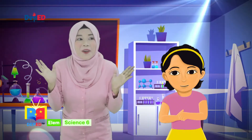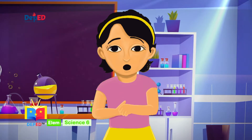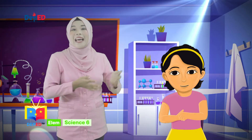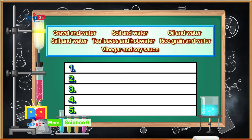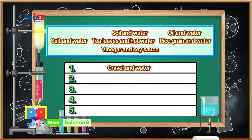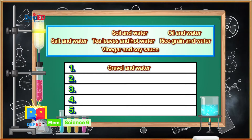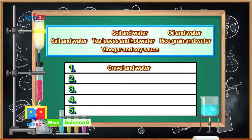Now, let's move on to 'What's More.' We have Sissy here again! So, Sissy, what help do you need right now? I have to pick out the examples of suspensions inside the box. Science-Minded Learners, can we help Sissy again? Great! Is the mixture of gravel and water an example of suspension? Yes, it is! Is the mixture of salt and water an example of suspension? No, it is not. The mixture of salt and water is an example of solution because the salt can be dissolved in water.